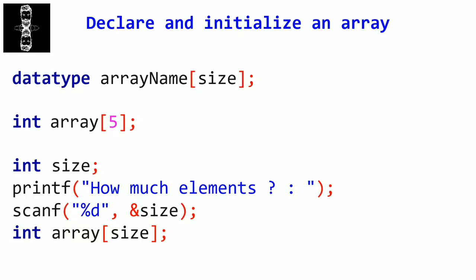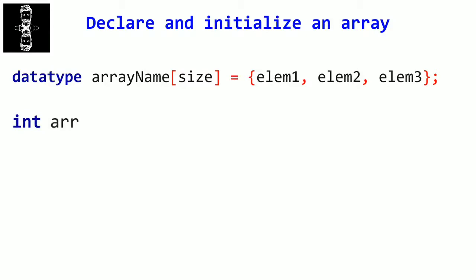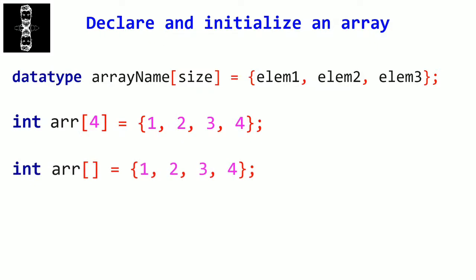We can also declare an array by initializing its elements. It's the same at the beginning: data type, array name, and size, but then we initialize the elements by putting them in curly brackets separated by commas. For example, to declare an array of 4 integers with values 1, 2, 3, 4: we write int, then the name r, then the size, then 1, 2, 3, 4 inside curly brackets. Note that you're not obliged to set the size when you initialize elements — the program declares an array large enough to hold all values. But don't remove the brackets — leave them empty. Otherwise you would get an error.